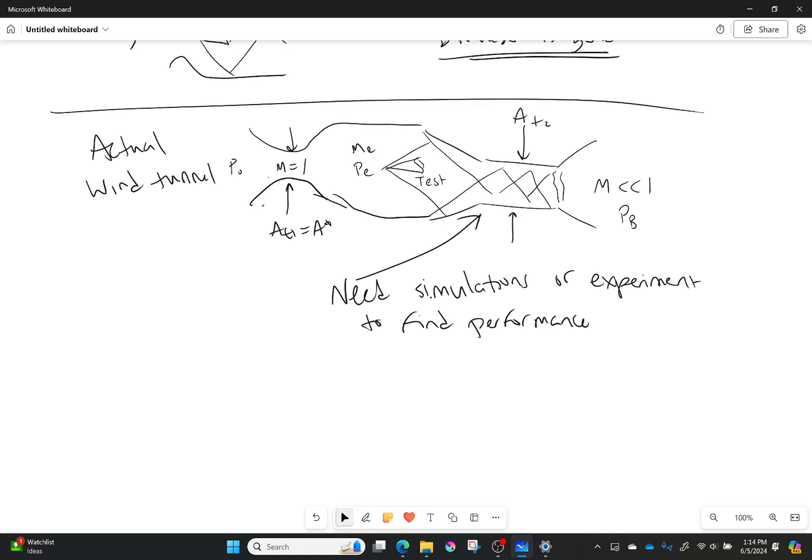But what we probably know is that the mass flow through throat 1 must be equal to the mass flow through throat 2.